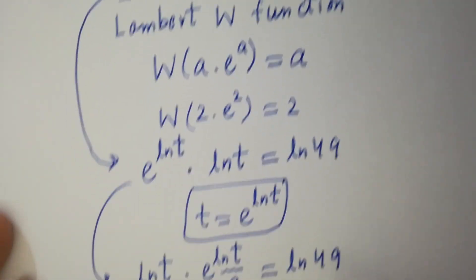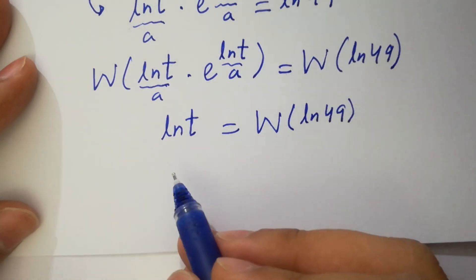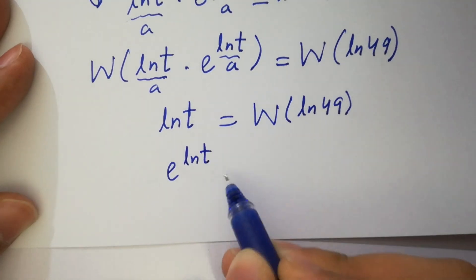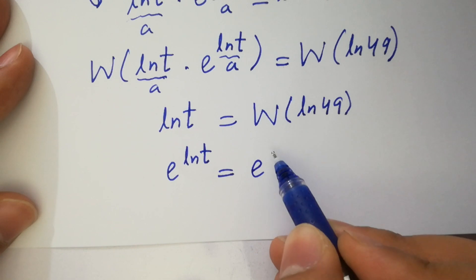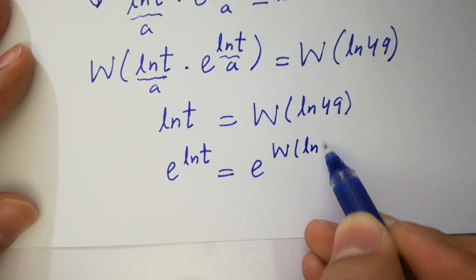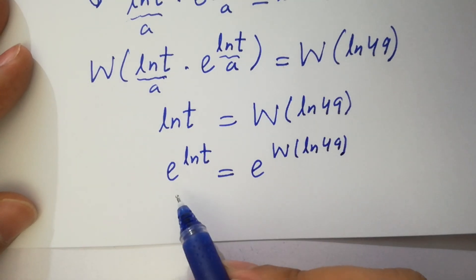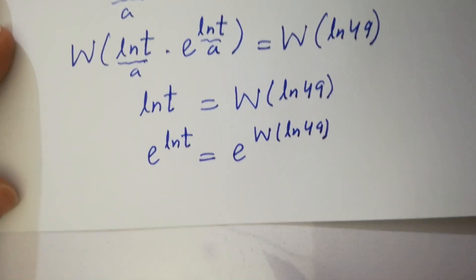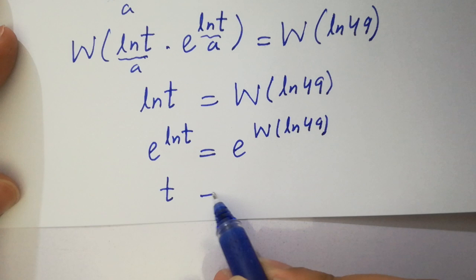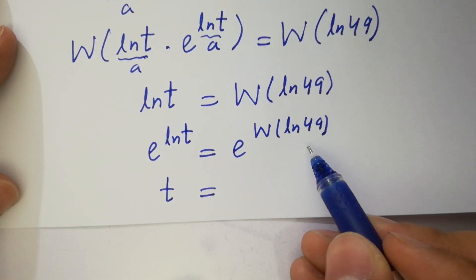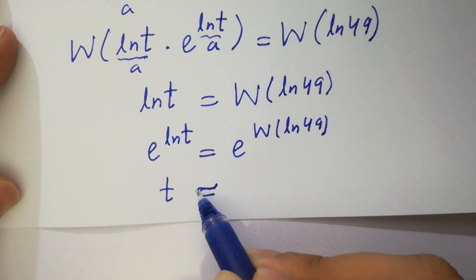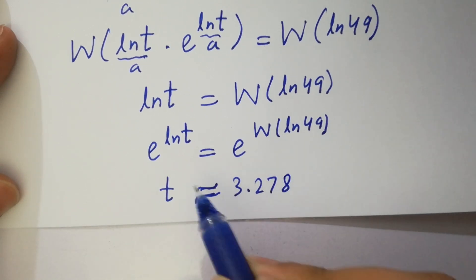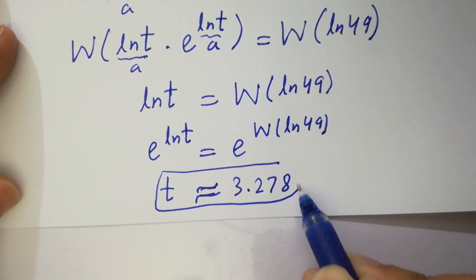So here e to the power ln t equals t. So it will be t equals e to the power W of ln 49, which is approximately equal to 3.278. Which is our value of t.